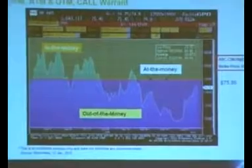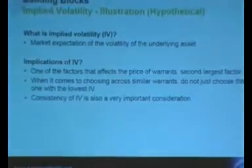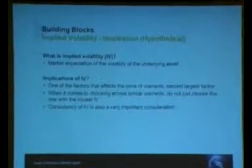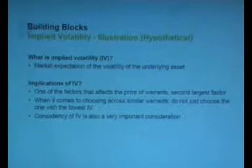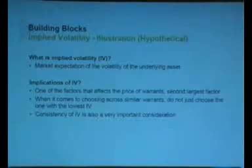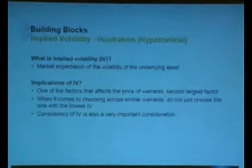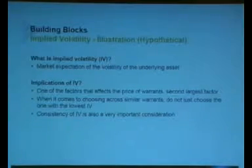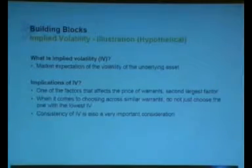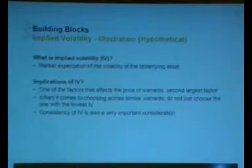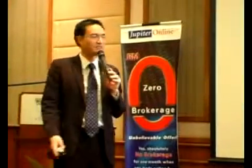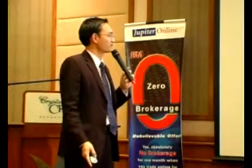That's the chart presentation on money-ness. Implied volatility is the market's expectation of the volatility of the underlying asset and is the second largest factor affecting warrant prices. If you don't yet understand the concept of implied volatility, please do not trade warrants — go study it further first.